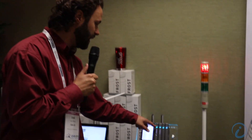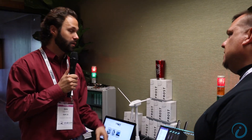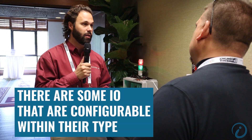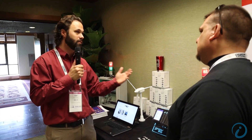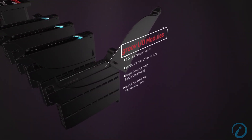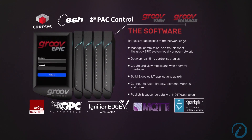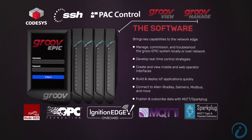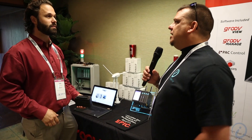The IO is configurable — each IO module is specific to its type. This module here is a DC output module, this is a DC input module, and this one is a thermocouple module. We do have further developments for IO modules that may have a mixture of types, and some are configurable within their type — for example, an analog input that can be configured as 4–20 mA, 0–10V, or voltage.